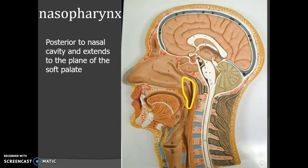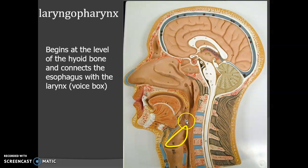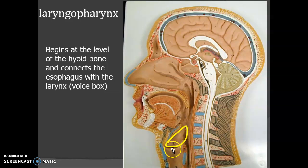The nasal portion is posterior to the nasal cavity and extends to the plane of the soft palate. Then we have the oral portion of the pharynx, which is posterior to the oral cavity and extends from the soft palate to the level of the hyoid bone. Finally we have the laryngopharynx, which begins at the hyoid bone level and connects posteriorly with the esophagus and anteriorly with the larynx, which is the voice box.